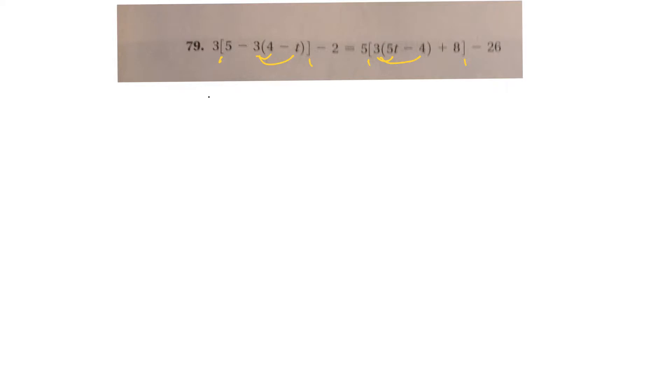So I've got 3 bracket 5 and I'm going to multiply the negative 3 by the 4. So that would be negative 12. And the negative 3 by negative t will be a positive 3t bracket minus 2 equals.